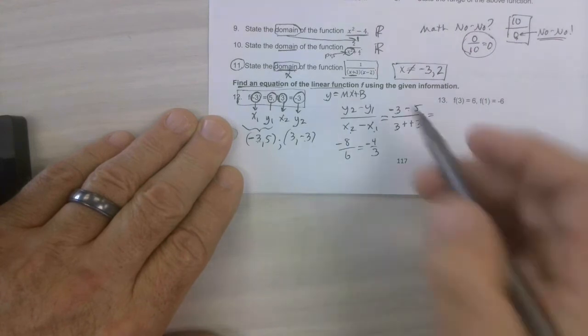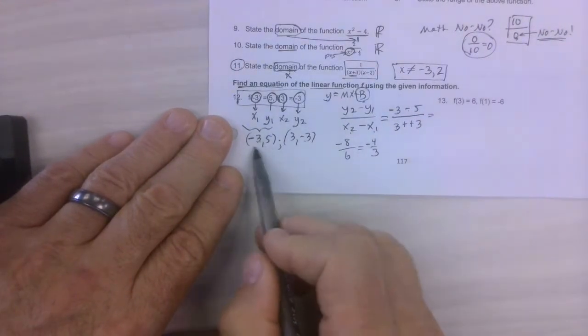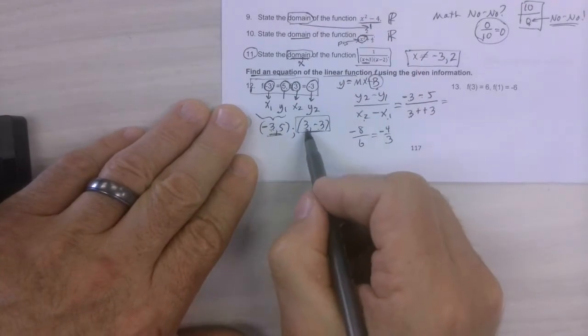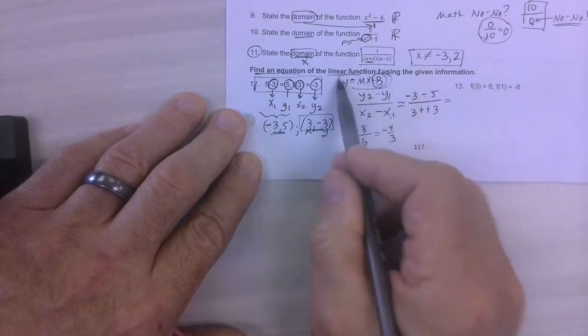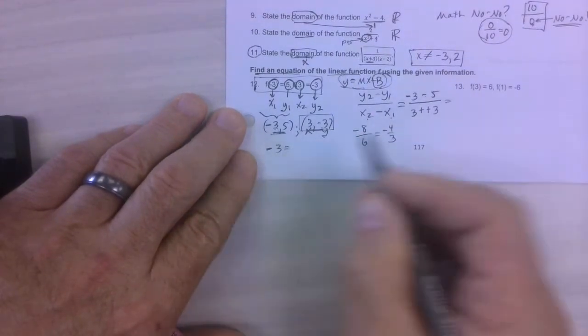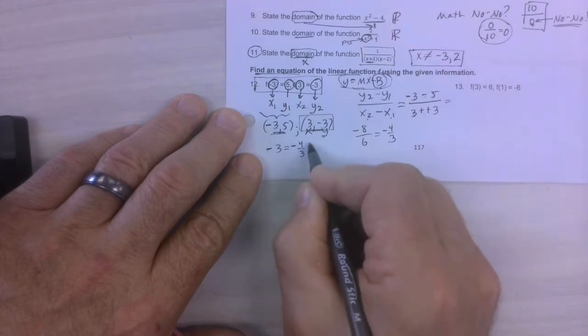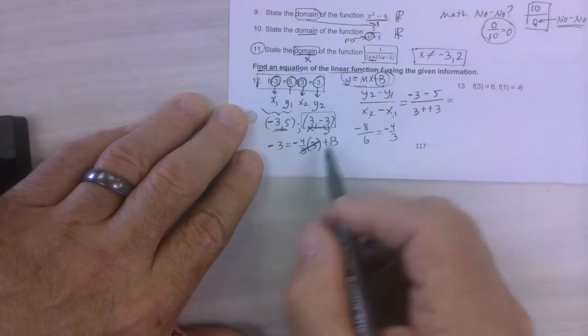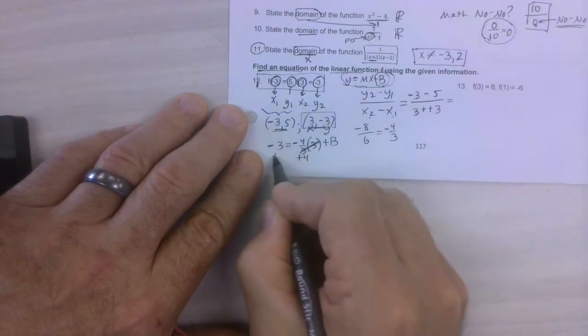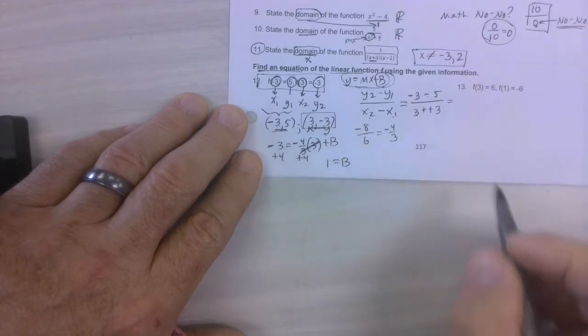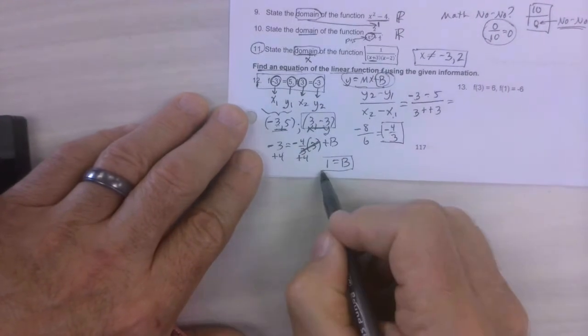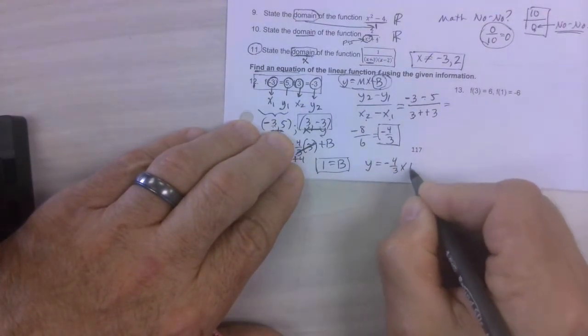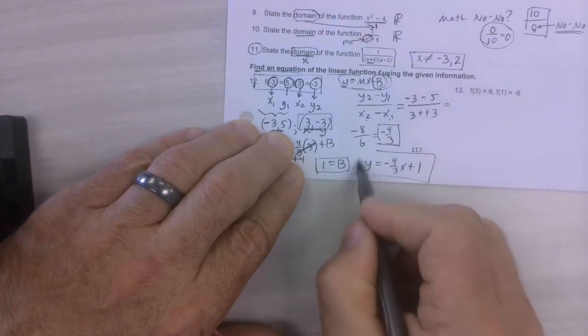Now, we've got some more work to do because we still need to find our y-intercept. So, we can pick either this point or this point. And I'm just going to pick this one. And this is my x. This is my y. I'm going to plug everything I know into here. So, y equals mx plus b. Now, notice, these 3's cancel. So, it's just leaving us with a negative 4. So, we're going to add 4 to both sides. So, I get 1 equals b. Here's my slope. Here's my y-intercept. Put that information together and I get y equals mx plus b. And there's that.